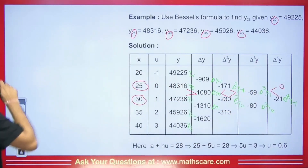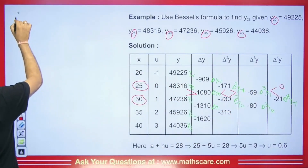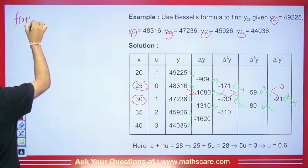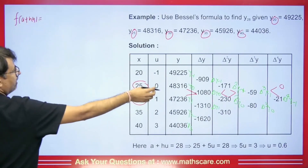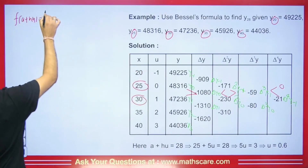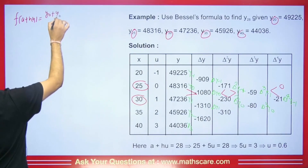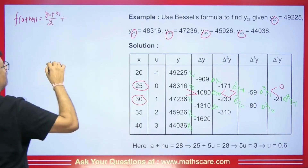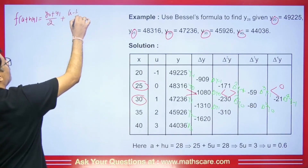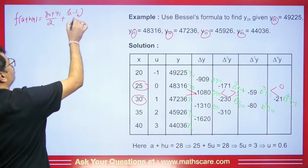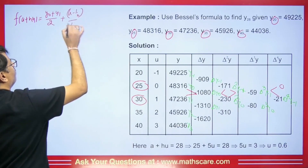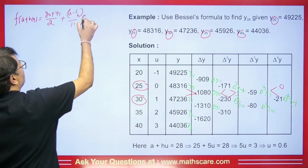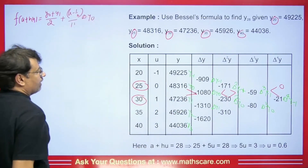What is the formula? The formula we have is F(A + Hu). Now here we will have Y0 plus Y1 divided by 2, plus (U minus 1/2) upon 1 factorial. Then here we have del Y0.